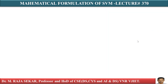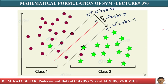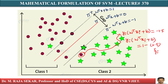Let me consider one more point. For this point, yi into W transpose Xi plus B is equal to minus 1.5. This is itself minus 1 — W transpose X plus B — your yi is positive, so 1 into minus 1.5 is minus 1.5, and minus 1.5 can be written as 1 minus 2.5.